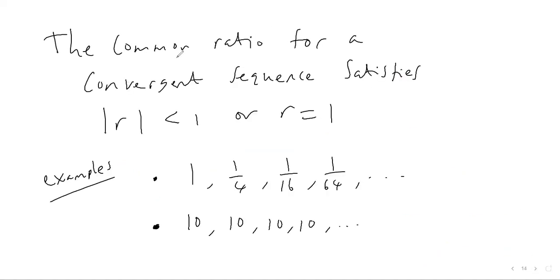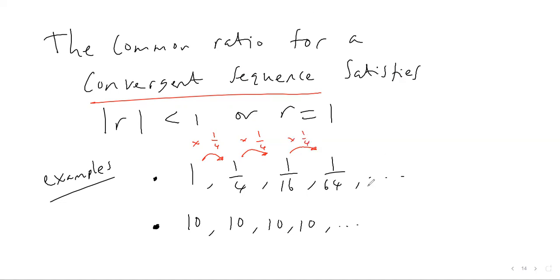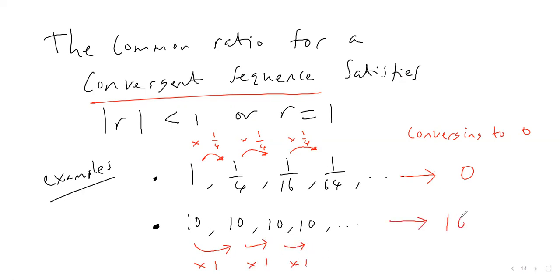A sequence with a common ratio whose modulus is less than one — or equal to one — is called a convergent sequence. For example, the sequence 1, 1/16, 1/64, … has common ratio 1/4, and it converges to zero. When the common ratio is less than one, the geometric sequence converges to zero. When the common ratio equals exactly one, the sequence converges to its starting value — for example, a sequence of all 10s converges to 10.